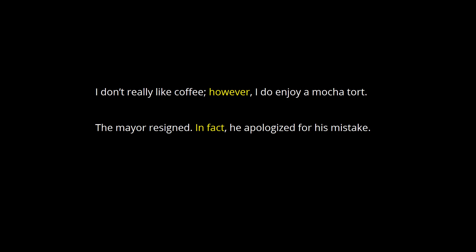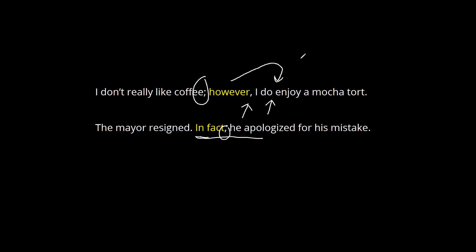Let's finish by paying a bit more attention to how we punctuate conjunctive adverbs. A conjunctive adverb often comes at the beginning of a sentence — that's no problem; we just stick a comma after it and keep going. It can also come a little bit later in the sentence, after a semicolon, and again we have a comma afterwards. The conjunctive adverb can also be moved around in the sentence. For example: 'I don't really like coffee. I do, however, enjoy a mocha torte' — if you move it there, you set it off with commas.